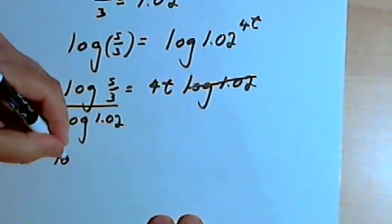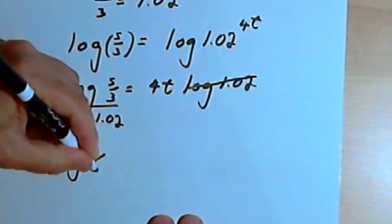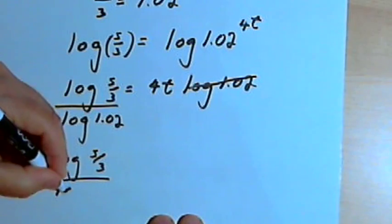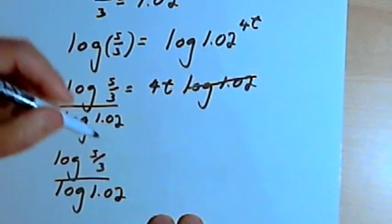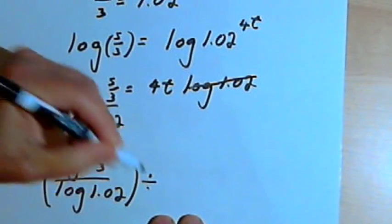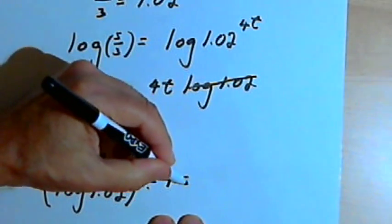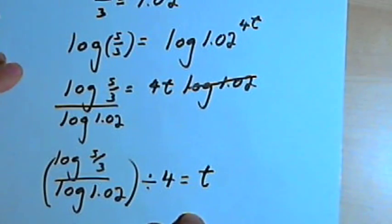So I've got the log of 5 thirds over the log of 1.02, that whole thing divided by 4. And that's going to equal t or the time it's going to take for this to grow to the $2,500 we want.